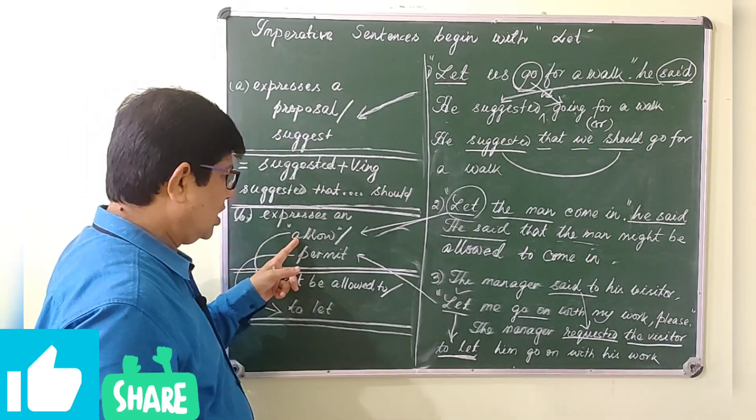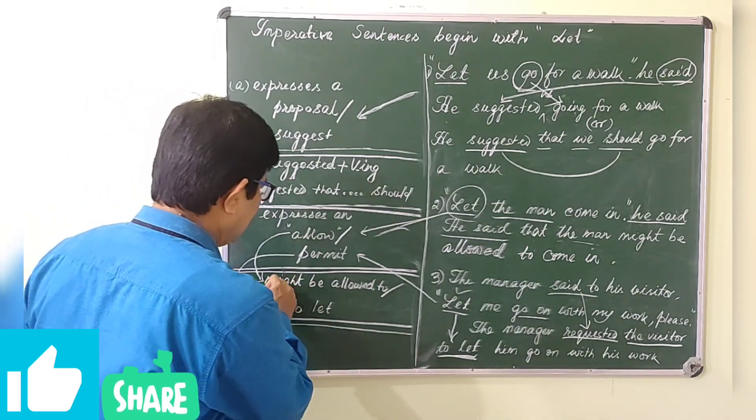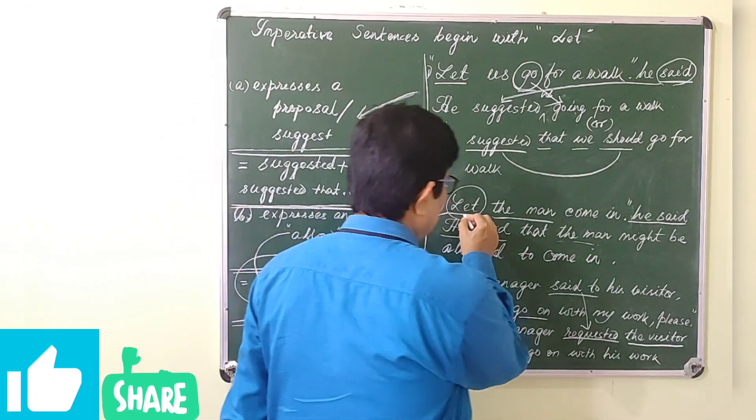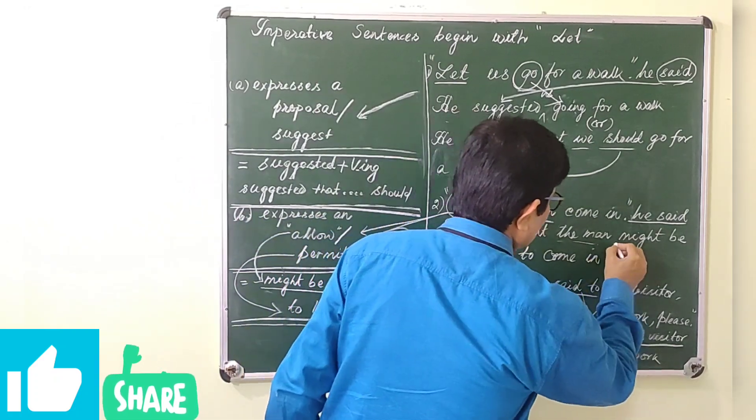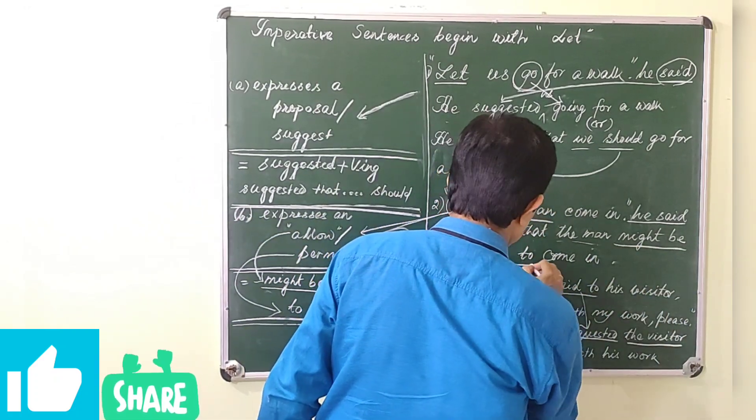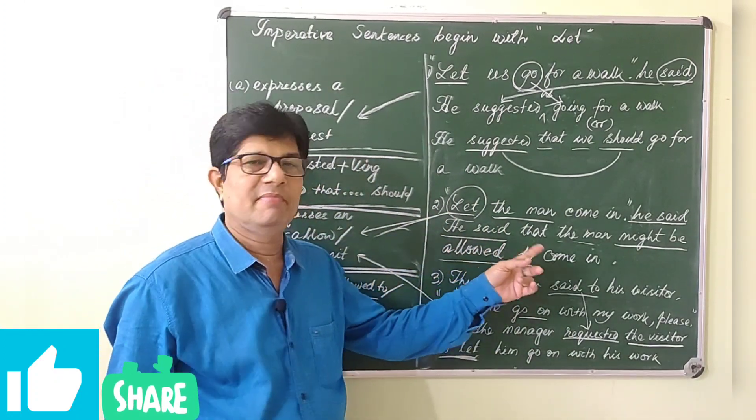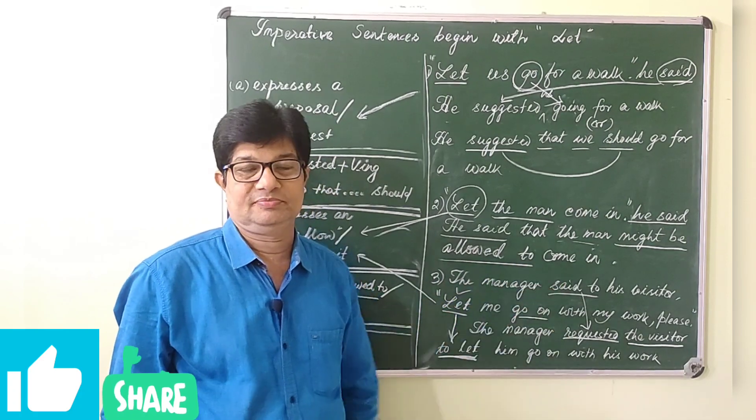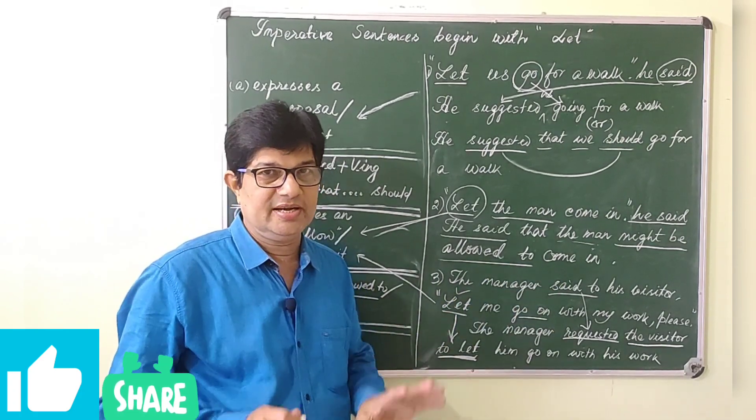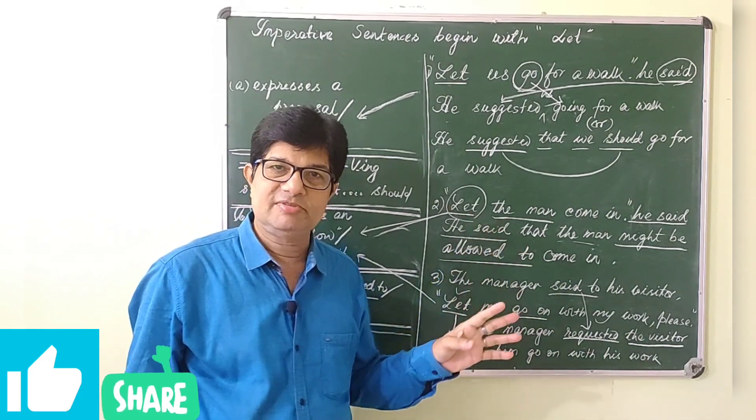When it expresses allow or permission, the full sentence is: He said that the man might be allowed to come in. This is the indirect narration of this imperative sentence.